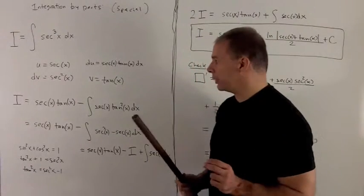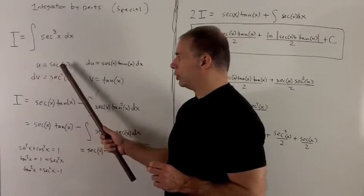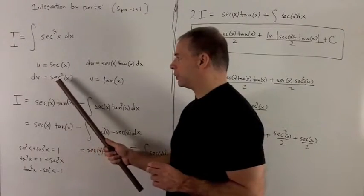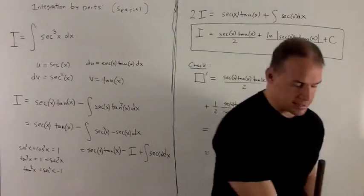So what we want to do is we'll let u be equal to secant x, dv equal to secant squared x dx.